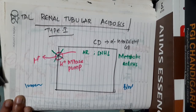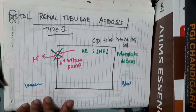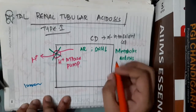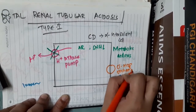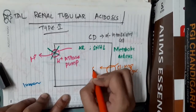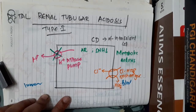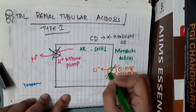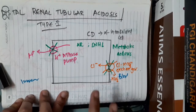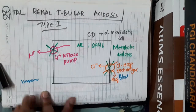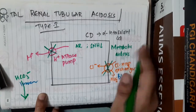Distal renal tubular acidosis also occurs due to a second mutation, which is seen in the basolateral membrane. In the basolateral membrane, we have an exchanger called the chloride-bicarbonate exchanger. This exchanger helps in secretion of chloride and reabsorption of bicarbonate. Whenever there is a mutation in this exchanger, there is no reabsorption of bicarbonate — bicarbonate is instead excreted — which also results in metabolic acidosis.